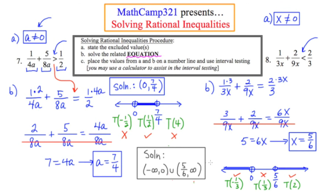The solution region in interval notation is from negative infinity to 0, union 5 sixths to infinity. That's the answer to number 8, and the answer to number 7 was the open interval from 0 to 7 fourths. I hope this video helped you understand how to solve rational inequalities following this simple three-step process.